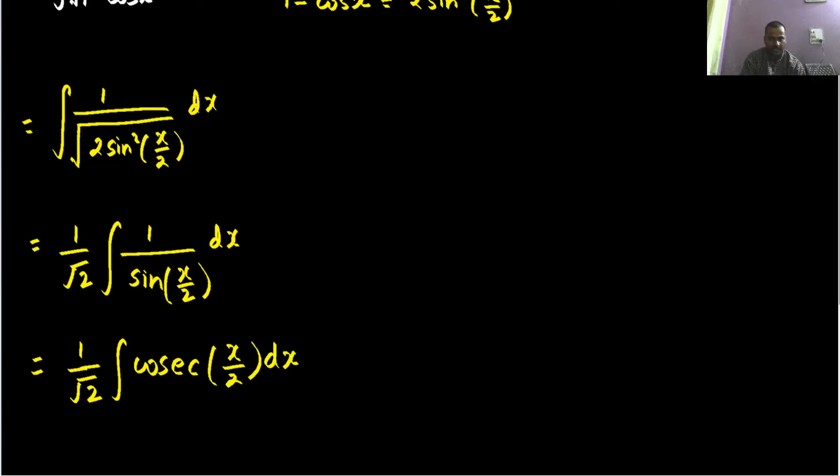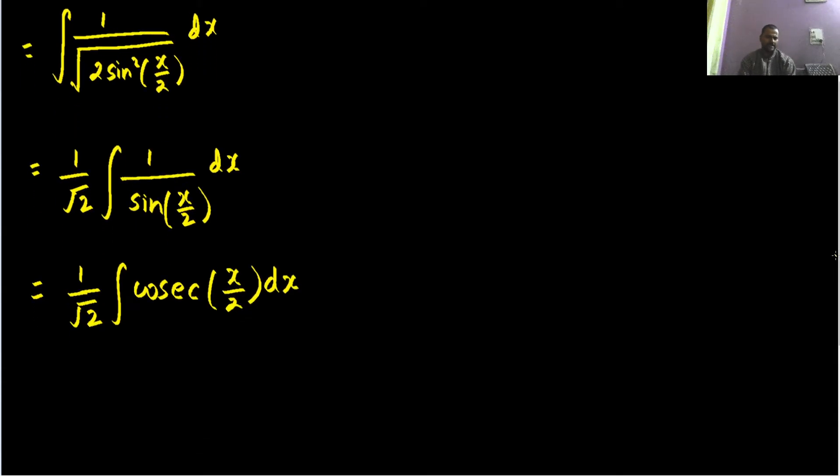Now if you wish, you can go with the substitution or you can directly use the trick for substitution. Yes, we can always go with this simple substitution. So this is giving you 1 by 2 dx equals to dt or dx equals to twice dt.